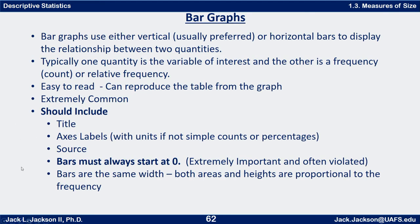You're probably already familiar with these. Bar graphs use either vertical, which is usually preferred, or horizontal bars to display the relationship between two quantities. Typically one variable is the variable of interest and the other is a frequency, like a count, or possibly a relative frequency. They can be easily read and reproduced — you can make one from a table, but you should also be able to reproduce the table from the graph if you've got a good scale. They're extremely common.